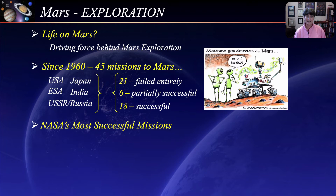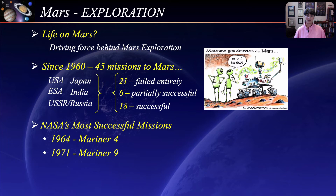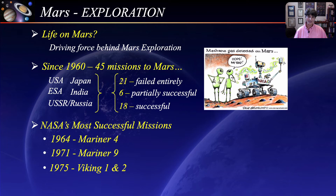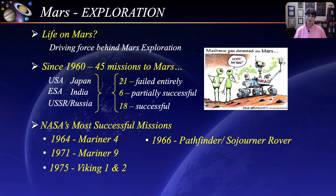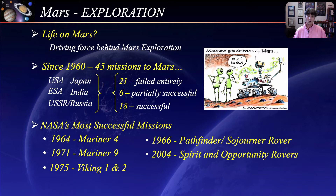A few of the most successful NASA missions include Mariner 4, the first successful flyby returning 21 images. Mariner 9 was the first spacecraft to successfully enter orbit around Mars. Viking 1 and 2 were the first two successful missions on the surface, lasting six and four years respectively. The Pathfinder mission was the first to deploy a rover, making Sojourner the first rover on Mars. The Spirit and Opportunity rovers landed in 2004 — Spirit ceased transmitting in 2011, while Opportunity continued operating until 2018, exceeding its original 92-day mission plan by 14 years.